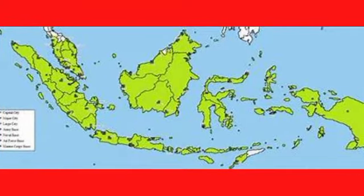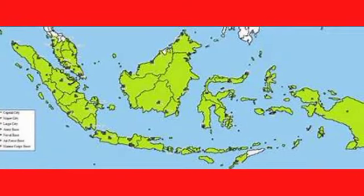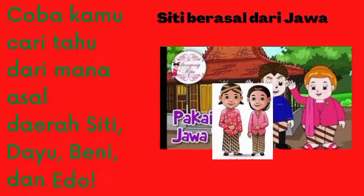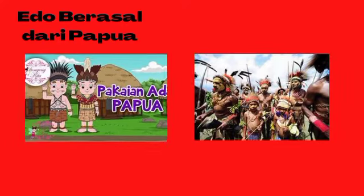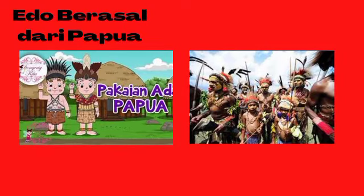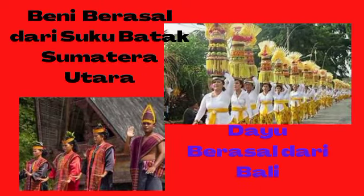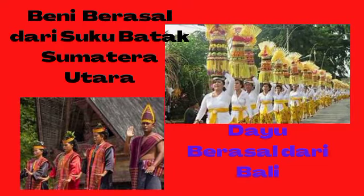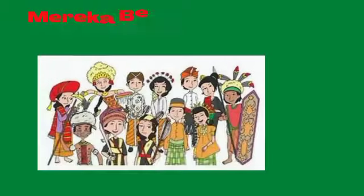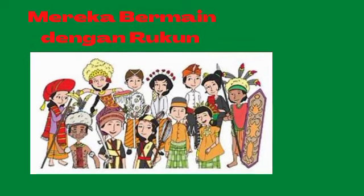Contoh di sini ada Dayu, ada Siti, ada Edo, dan lain sebagainya. Siti berasal dari Pulau Jawa — anak-anak lihat di situ pakaiannya dan tariannya seperti apa. Lalu berikutnya ada Edo yang berasal dari Papua, lihat pakaiannya anak-anak, perhatikan. Lalu ada Beni berasal dari suku Batak, suku Batak itu berasal dari Sumatera Utara. Ada Dayu berasal dari Bali, lihat pakaiannya, tariannya, dan lain sebagainya. Mereka bermain dengan rukun sekalipun berbeda suku dan asal daerah masing-masing.